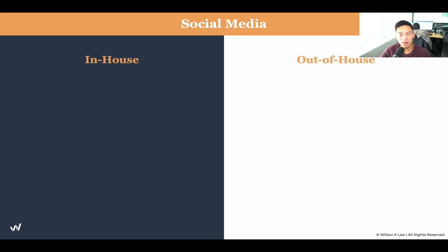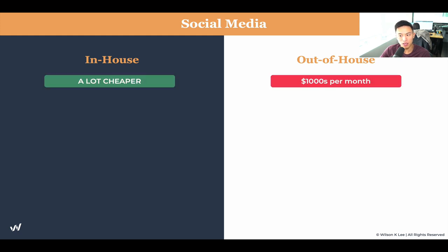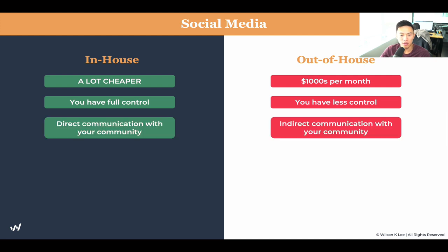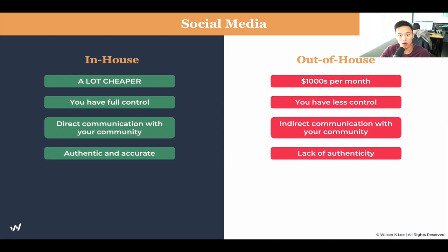If you're thinking about growing your social media platform, you can consider having in-house or out-of-house help. In-house is a lot cheaper, whereas out-of-house can cost you thousands of dollars per month. In-house gives you full control of the whole process, whereas out-of-house means you have way less control and are relying on the expertise of the agencies. In-house also gives you a way to directly communicate with your community and have the pulse on your customers, whereas out-of-house is really indirect communication.